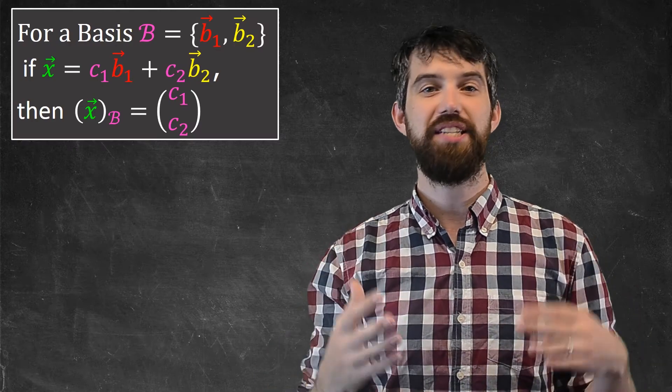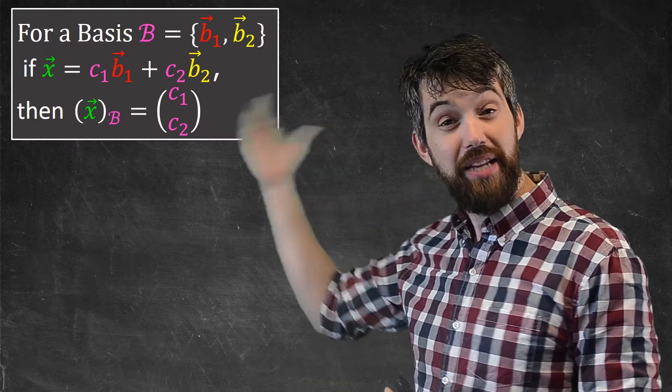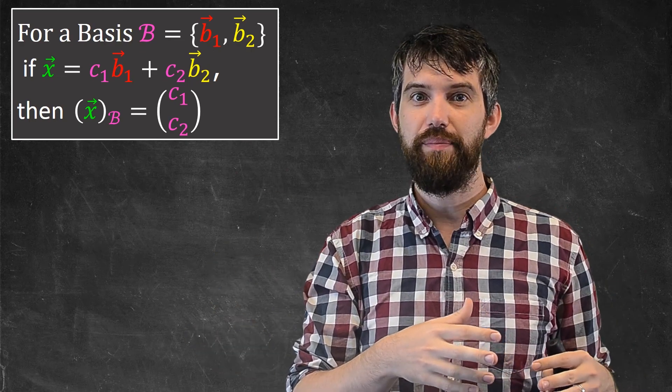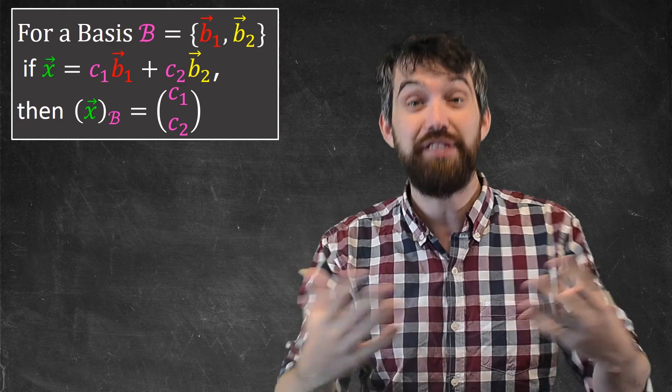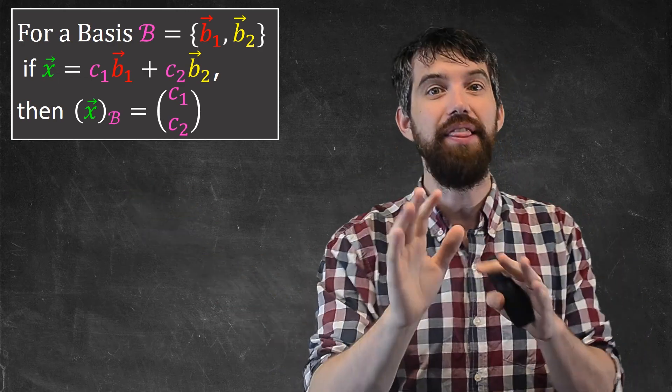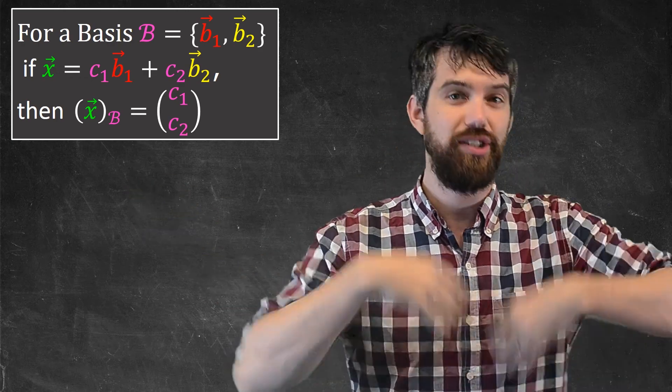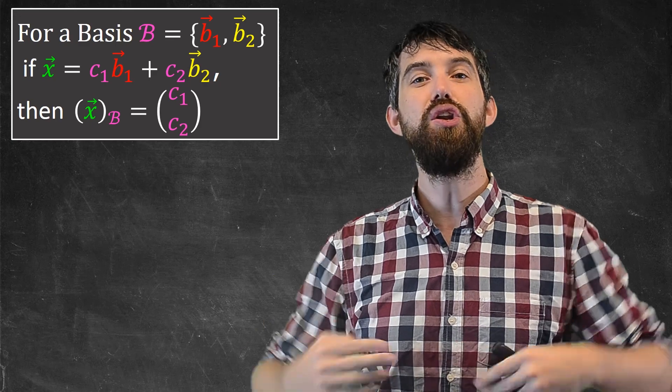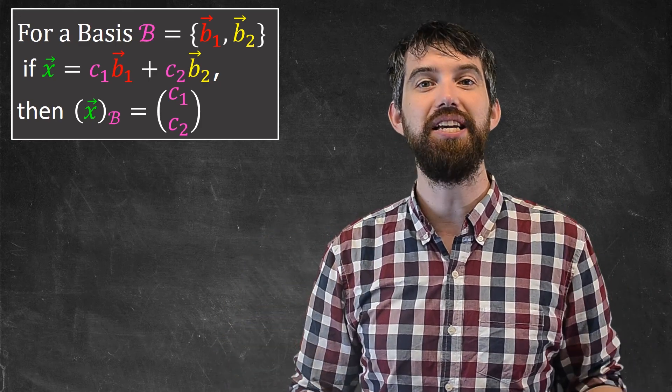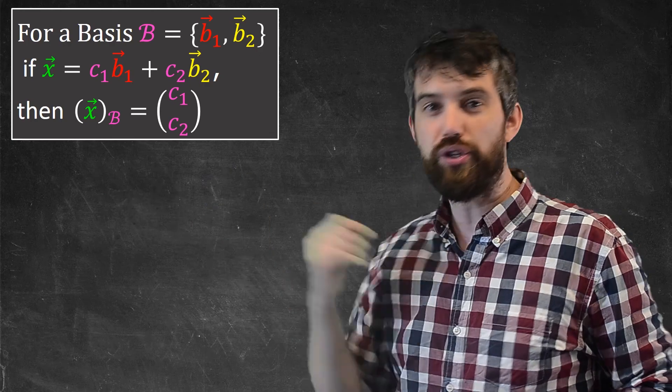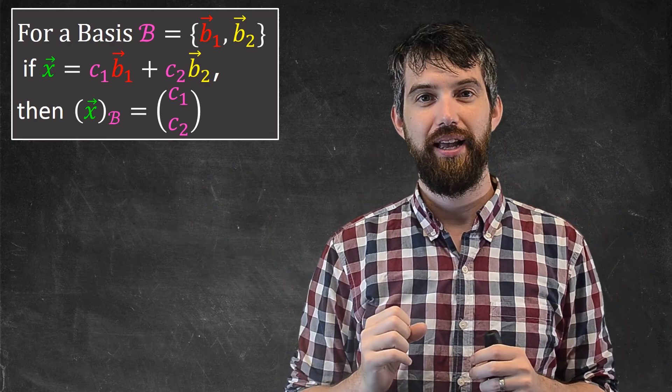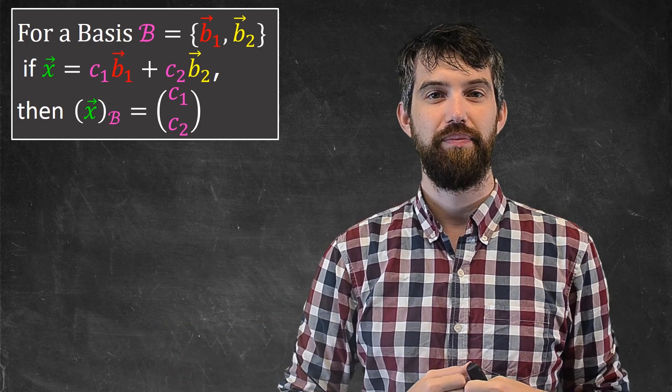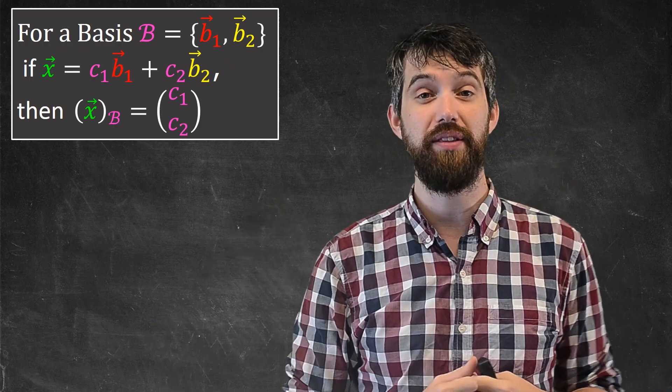Let's investigate what's going on generally. Here I have a particular basis, the B basis, and it's got vectors b1 and b2. Then, if I take some other vector, some x vector, and write it as a linear combination in this basis, as in it's a c1 times the first basis vector b1 and a c2 times the second basis vector b2, then the new thing that I'm going to define is this idea of a vector x subscript the B basis. As in, I mean, the vector x written in terms of the B basis. And what that is, it's just the coefficients of the c1 and the c2.